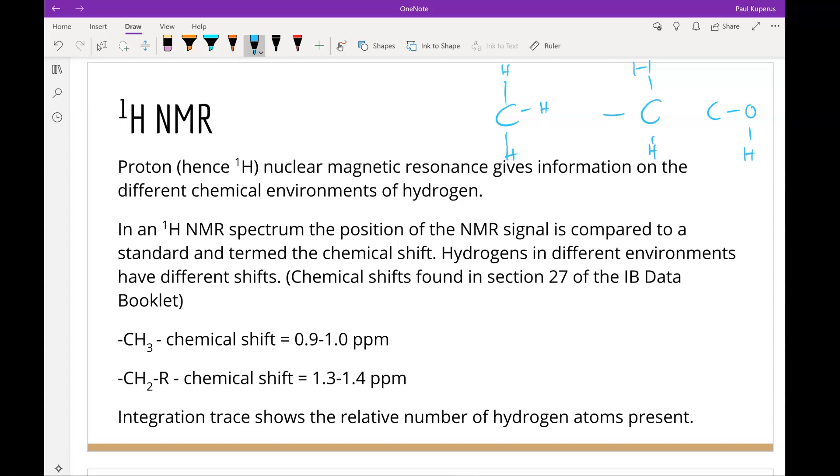The spectrum position of the NMR signal is compared to a standard, and we term it the chemical shift. This is just how far it is shifted compared to that standard. Hydrogens in different environments have different shifts, and it actually gives us a better idea of what is present in the molecule.